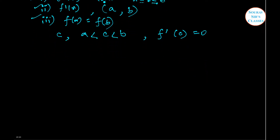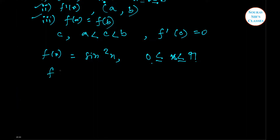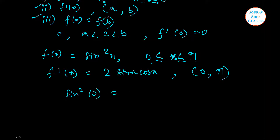Now let us have an example. Let us consider the function f(x) equal to sin squared x, where x lies in the closed interval of 0 and pi. We are seeing that f(x) must be continuous in the closed interval of 0 and pi. We are going to have f'(x) as 2 sin x cos x, which is also differentiable in the open interval of 0 to pi. Now let us put sin squared 0 equal to sin squared pi — we will get both values equal to 0.